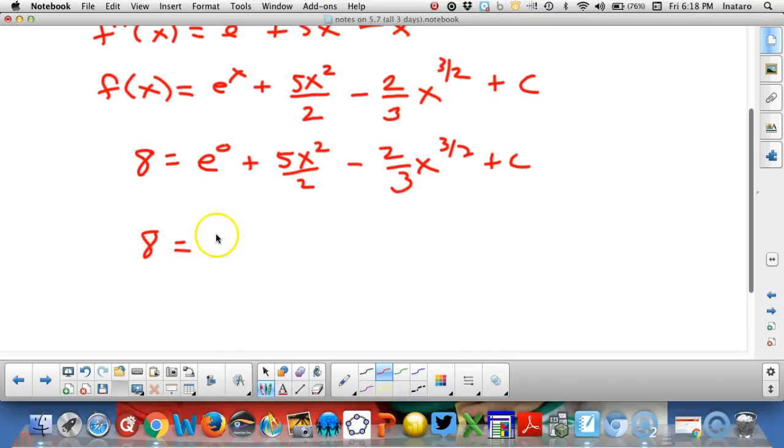e to the 0 we know is 1 since anything to the 0 power is 1. Oops, I forgot. I need to write a 0 in here. Let me fix this. I'm sure you already did that.